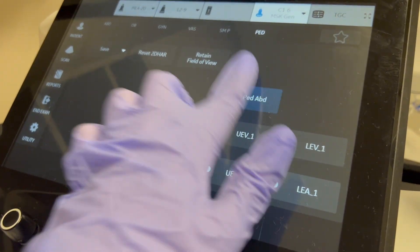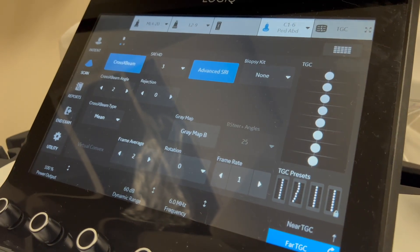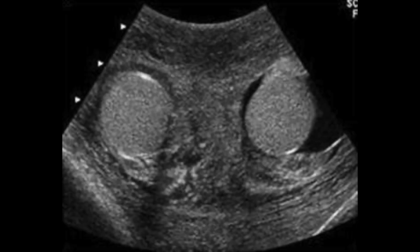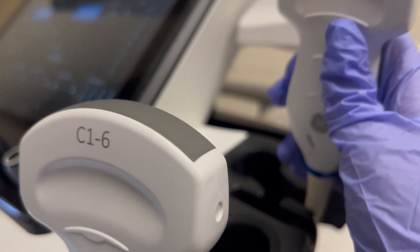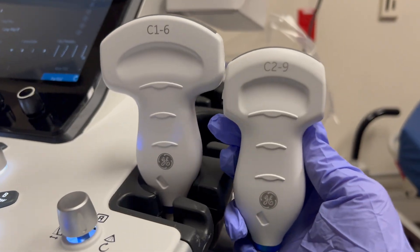Another exam you wouldn't think to use the curve probe on is a scrotal exam. If they are really swollen, you can try the curve to see if you can see the testicles more clearly. Always think outside of the box.